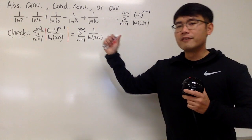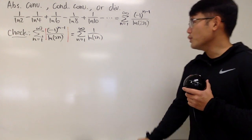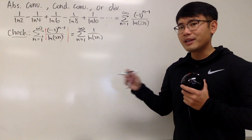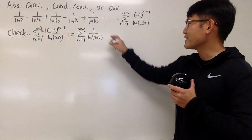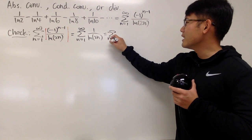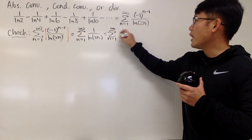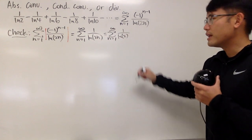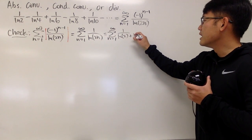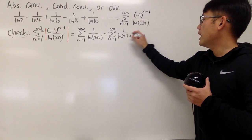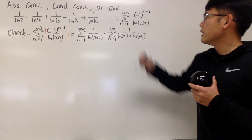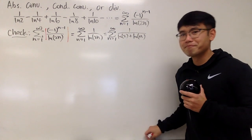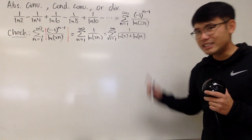Does this converge or not? We can use the log property — natural log of 2n equals natural log of 2 plus natural log of n — to write this as the sum of 1 over (natural log of 2 plus natural log of n), where natural log of 2 is just a constant. This right here diverges.